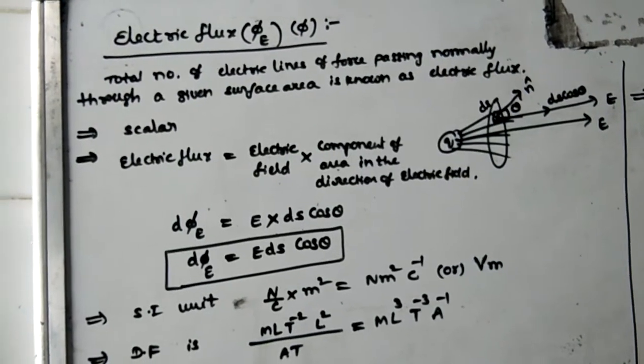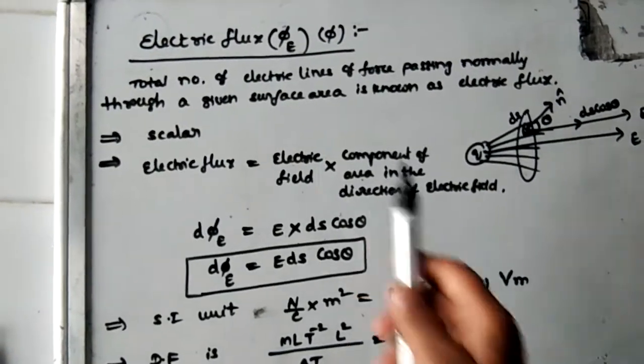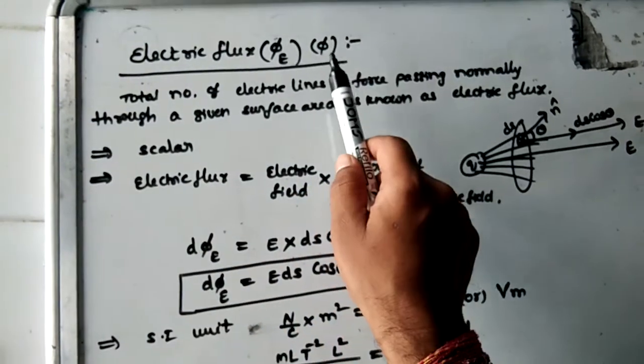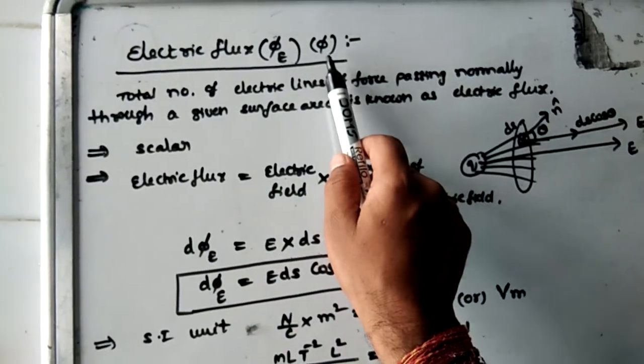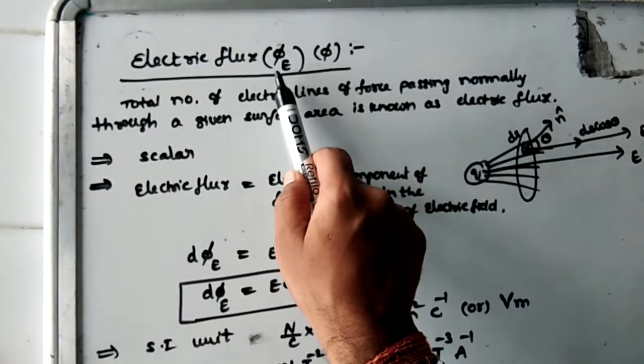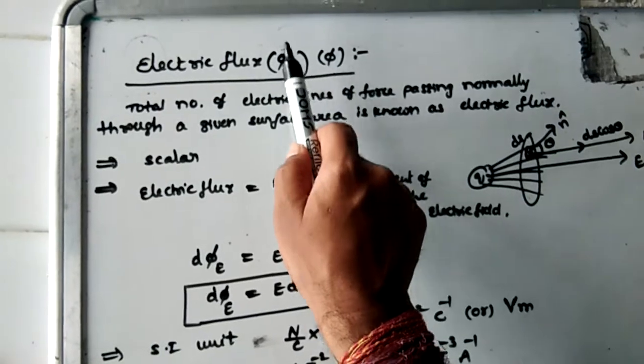Okay students, coming to the next concept: electric flux, denoted by the symbol phi E, where phi E indicates electric flux.